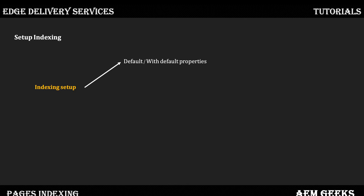As I have already explained, there are two types of indexing — two ways you can set up indexing. One is the default way: you only need to create a query-index file in your content repository and add the properties as a column. Another way is how you achieve more complex scenarios using configuration files. The first one I have already explained in the last tutorial, so please go back and check that. As part of this tutorial, we'll see how you can set up indexing with additional properties using a configuration file.